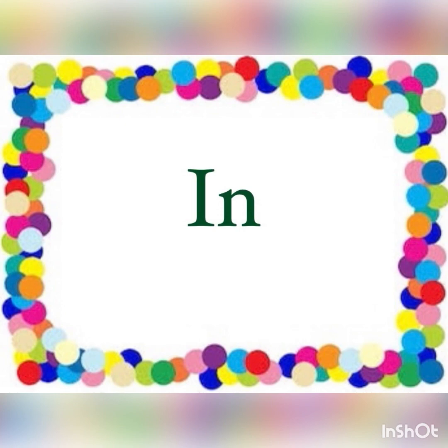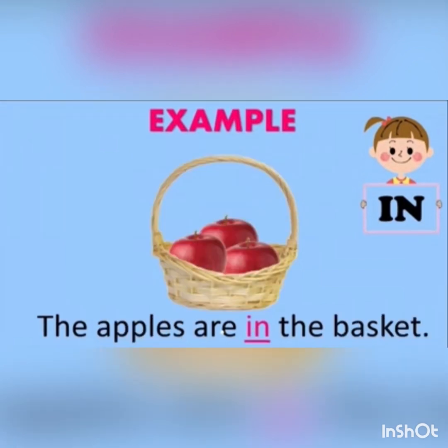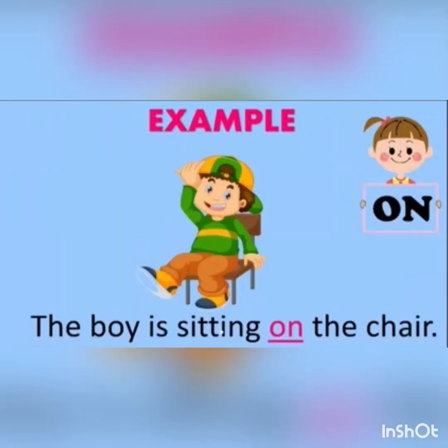Examples of 'in': The eggs are in the nest — eggs kaha hain? Nest ke andar. So is sentence mein position word hai 'in'. The apples are in the basket — apples kaha hain? Basket ke andar. So sentence ka position word hai 'in'.